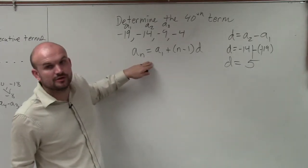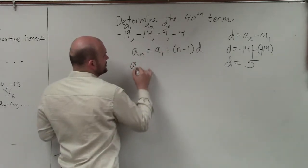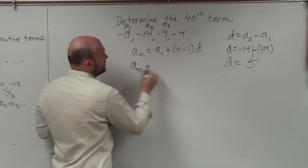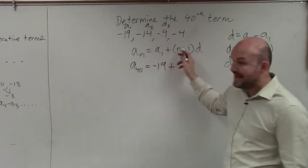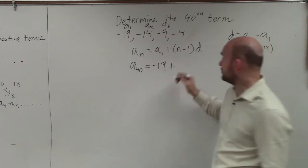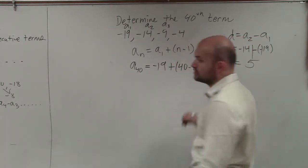Now, all I'm simply going to do is add the information in that I have. We're trying to find the 40th term. So that's going to be a to the 40th. A to the 1 is negative 19 plus n, which is the same thing as your 40. So that's going to be 40 minus 1 times d, which is 5.